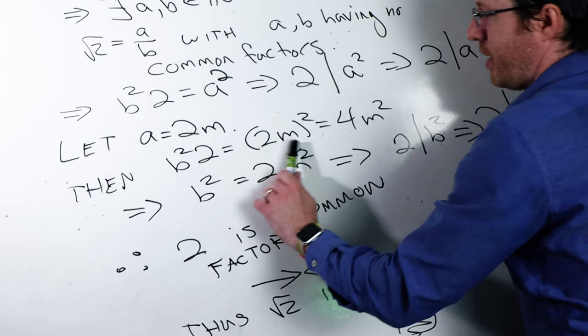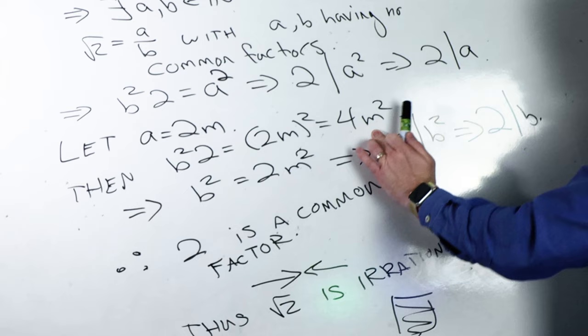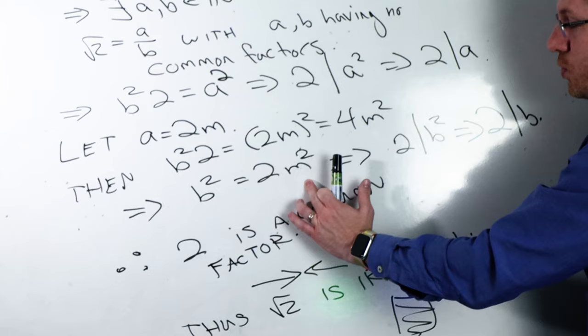If we plug 2m in for a, we get b squared times 2 is equal to 2m squared, and then that is 4m squared. We can cancel that out and we get b squared is equal to 2 times m squared. And that tells us that 2 divides b squared, which then tells us that 2 must divide b because 2 is prime.